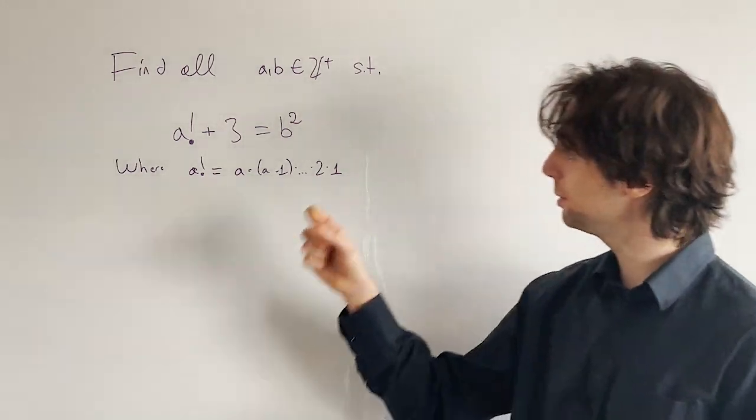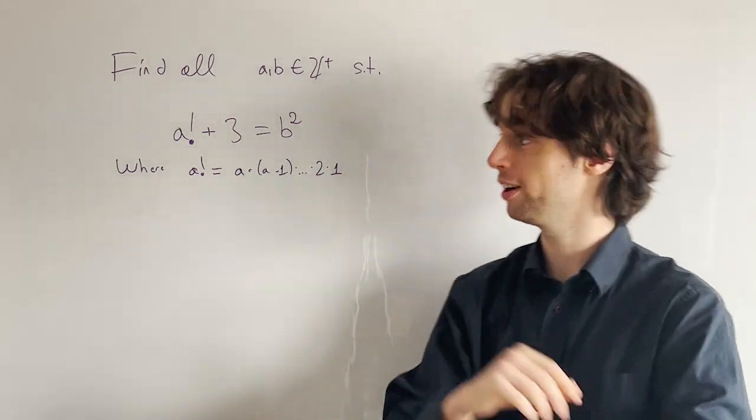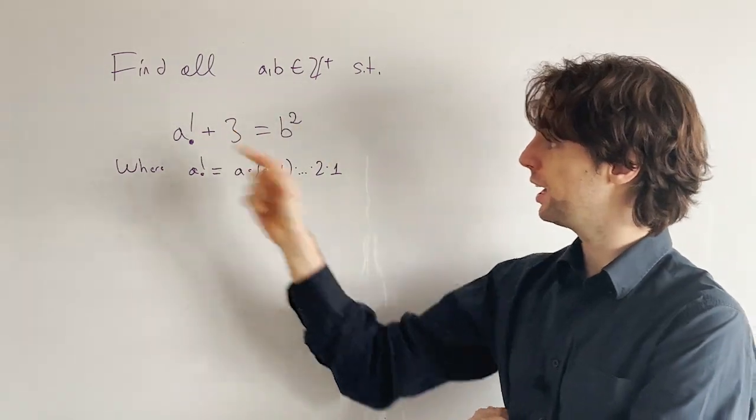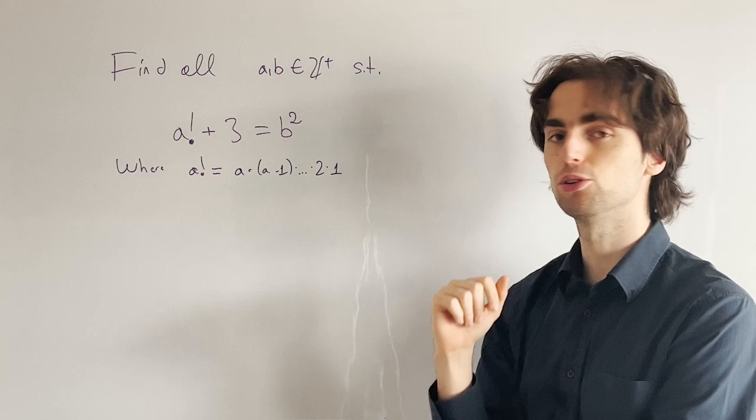Hello fellow problem solvers! Today we're going to be doing a number theory problem here. Find all the positive integers a and b such that a factorial plus 3 equals b squared.